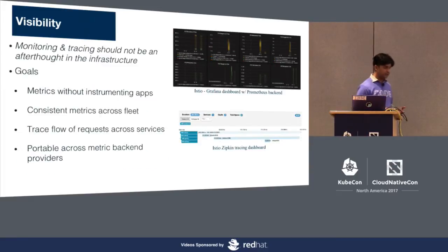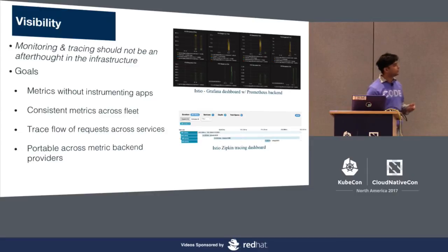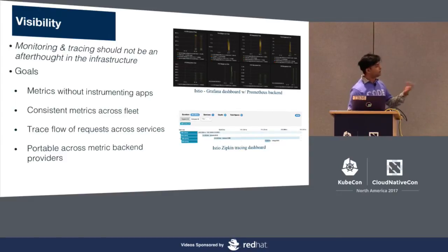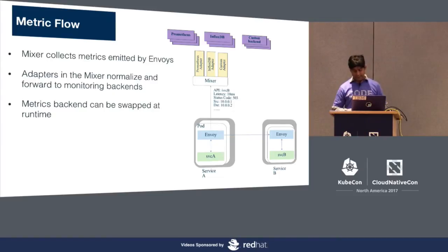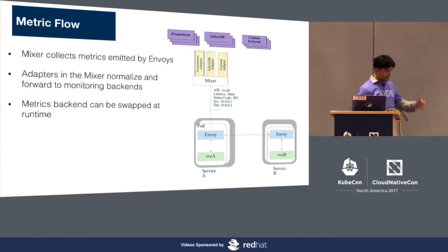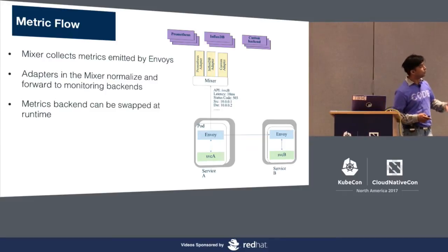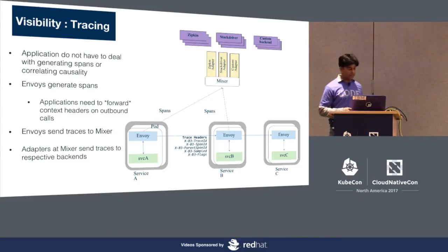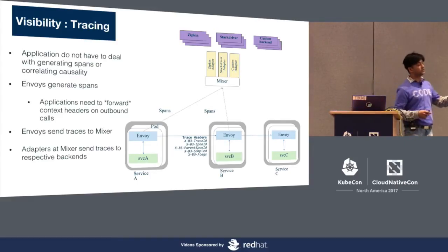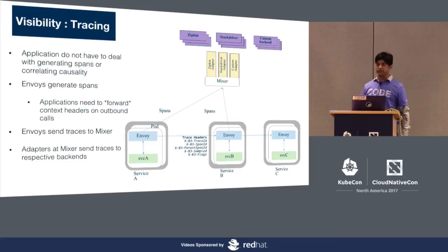Visibility is essentially key — how do you actually see what's going on in your service mesh? Istio comes by default with Grafana with a Prometheus backend, as well as Zipkin, which gives you consistent metrics across the whole fleet of microservices you have deployed. Since Envoy intercepts every incoming and outgoing traffic, it stores that data and transfers it to Mixer, which has a plugin-based architecture. Prometheus and Grafana are plugins for this, and you can bring your own dashboard. Zipkin gives you request tracing so you can see which services are lagging or slow.